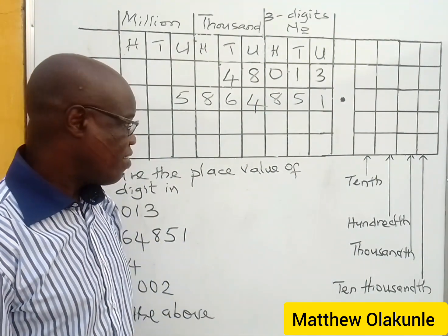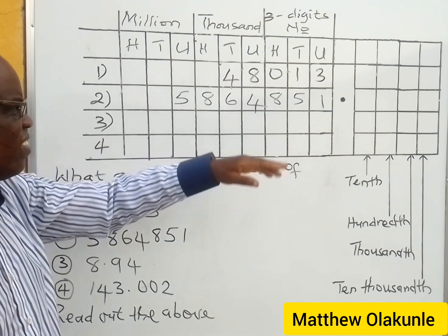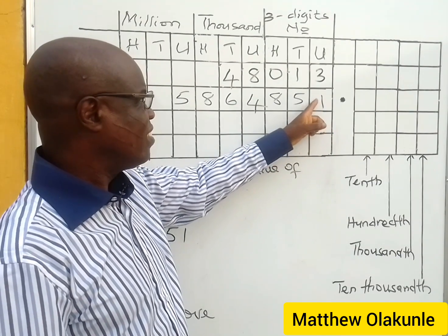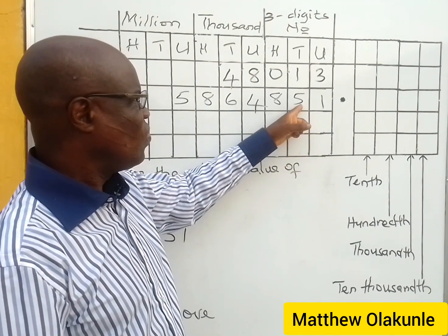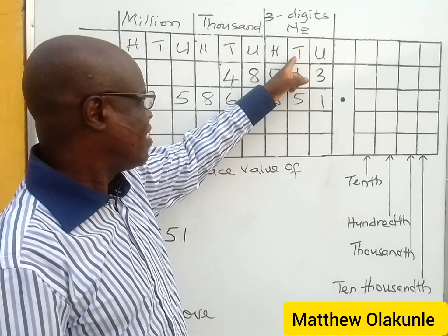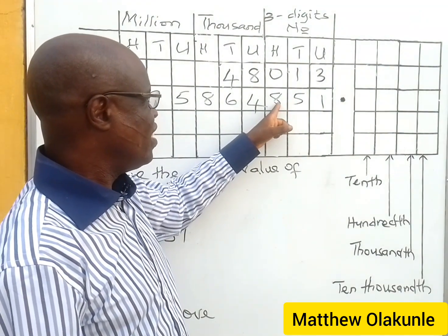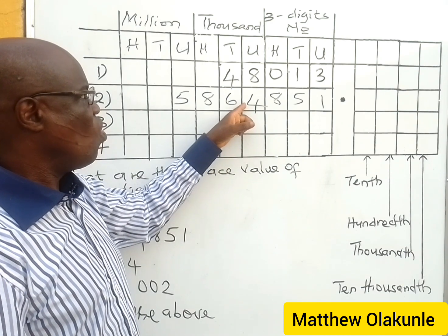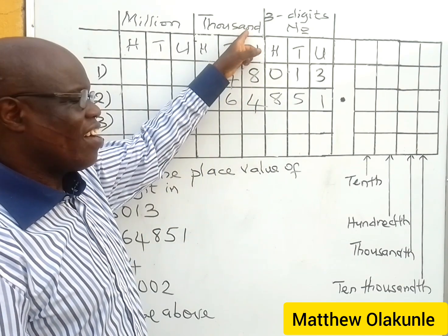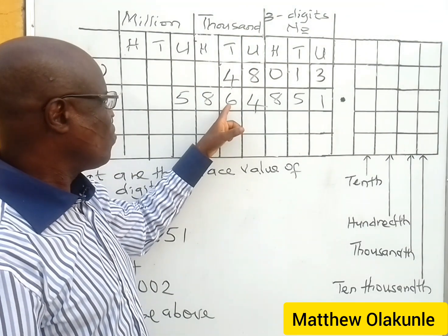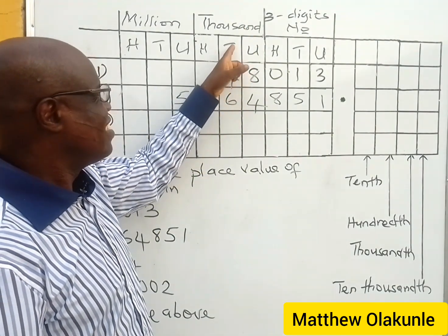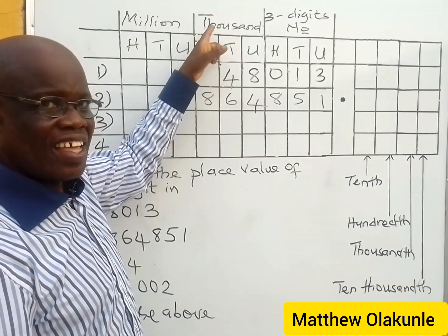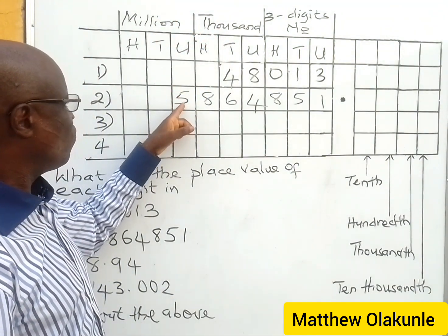Now the second number is already set up, and this digit has the place value of one; this one has the place value of fifty — that's five tens; this one has the value of eight hundred; then this one has the value of four thousand; and this one has the value of sixty thousand; then this digit has the value of eight hundred thousand; and this one has the value of five million.